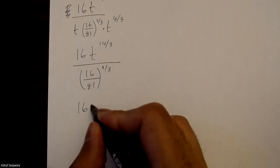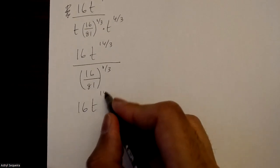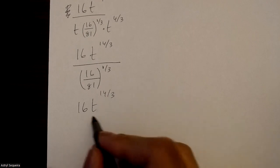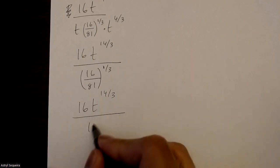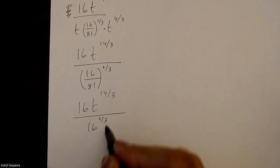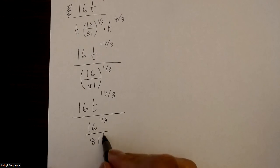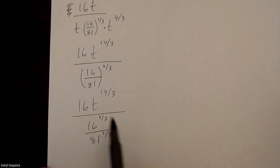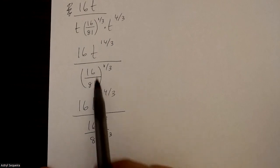So I have 16 times t to the power of 14 over 3, divided by 16 to the power of 1 over 3 over 81 to the power of 1 over 3. I basically just split my exponent into these two.